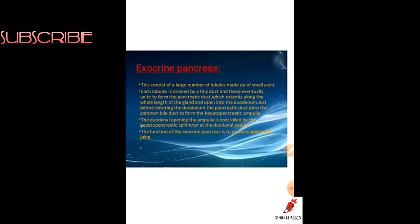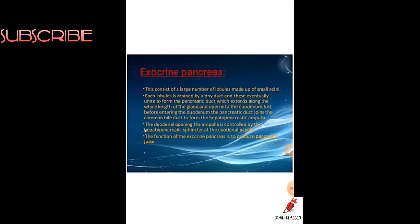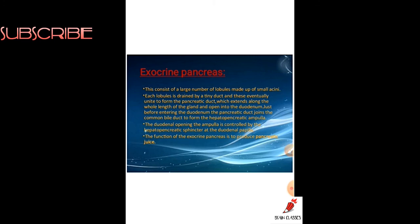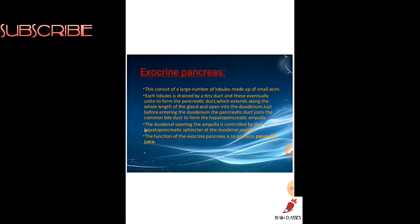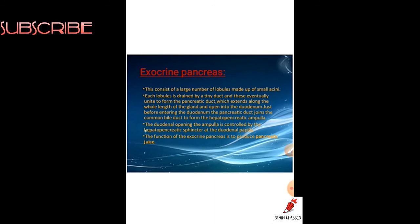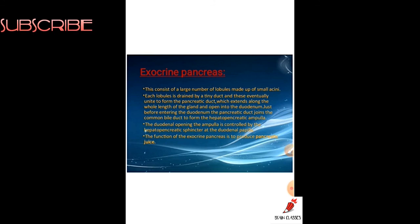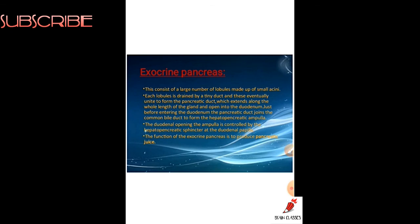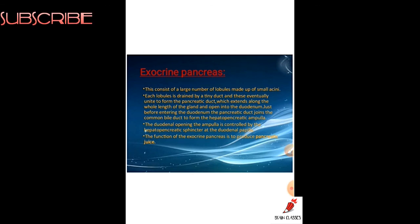The exocrine pancreas consists of a large number of lobules made up of small acini. The exocrine pancreas has a large number of lobules in which small acini are present, which secrete digestive enzymes into the pancreatic duct. Each lobule is drained by a tiny duct, and these eventually unite to form the pancreatic duct, which extends along the whole length of the gland and opens into the duodenum.